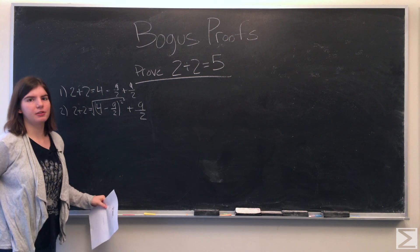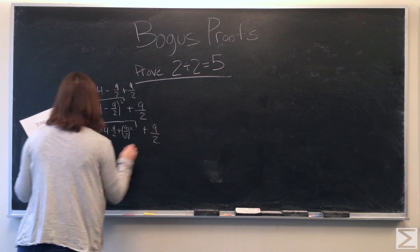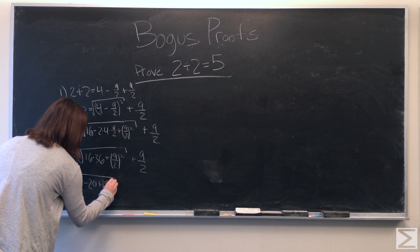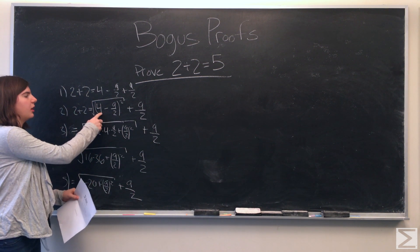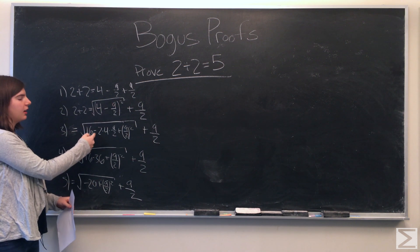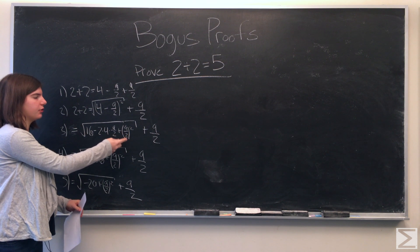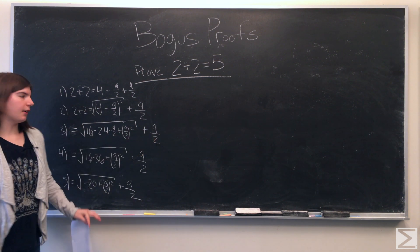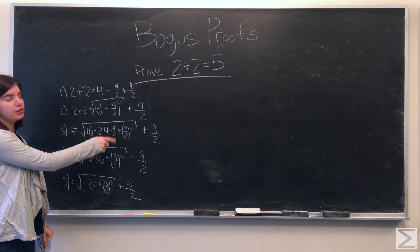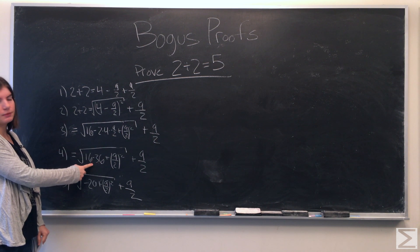And now we're going to expand this polynomial. So when we expanded 4 minus 9 halves squared, you'd have 16 minus 2 times 4 times 9 over 2 plus 9 over 2 squared, and then you still have the 9 halves over there. And then 2 times 4 is 8, times 9 is 72, over 2 is 36, and that's the only change in this line.